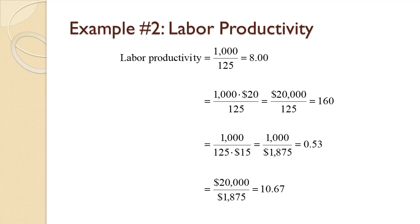To convert output to dollars, we multiply output times its value of $20. This gives us $20,000, which divided by 125 gives us 160. So each hour of labor yields $160 in output. Leaving the output as units and converting 125 labor hours to dollars by multiplying by $15 gives us 0.53, so each dollar of labor yields 0.53 units of output. Finally, converting both output and labor to dollars yields 10.67, so each dollar of labor yields 10.67 dollars of output.